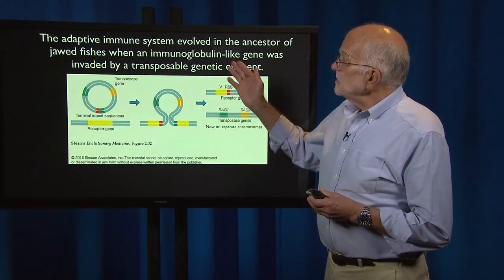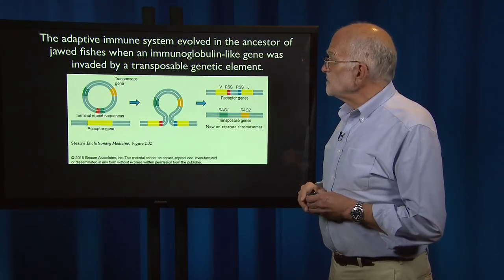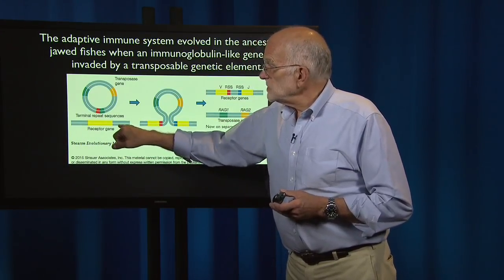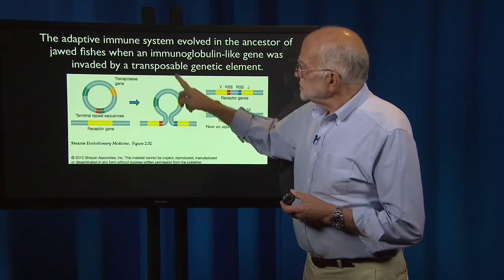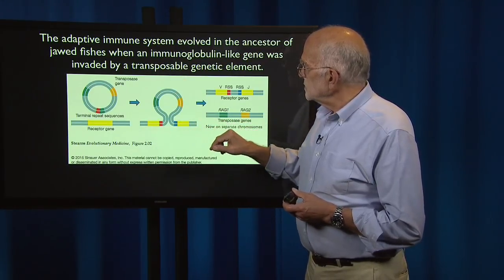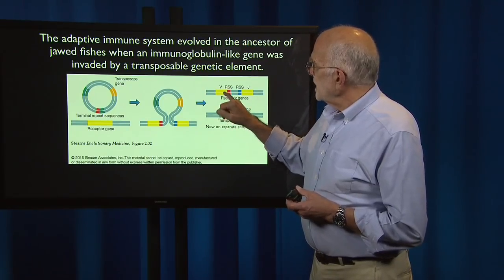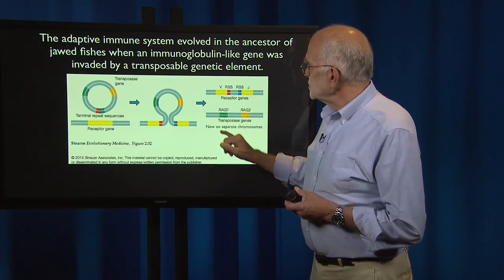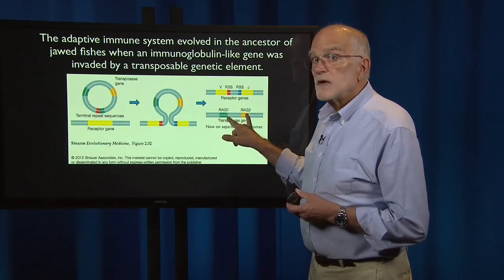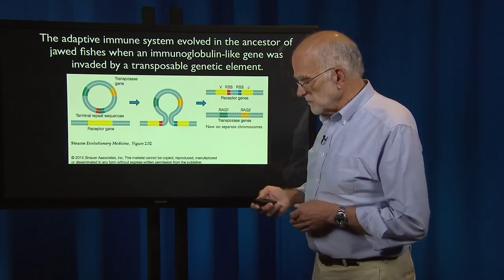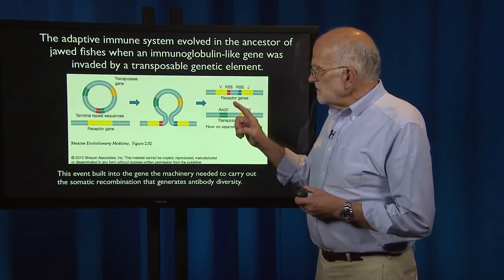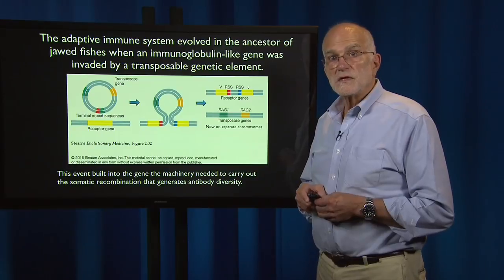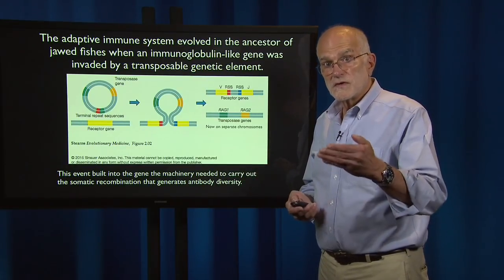The adaptive immune system evolved with the invasion of a transposable genetic element into the immunoglobulin gene. The transposase gene inserted into the middle of that immunoglobulin gene. The transposase genes — now called RAG1 and RAG2 — have since moved to separate chromosomes through subsequent evolution. That event built into the gene the machinery needed to carry out the somatic recombination that generates antibody diversity, which we will discuss in more detail when we come to defenses.